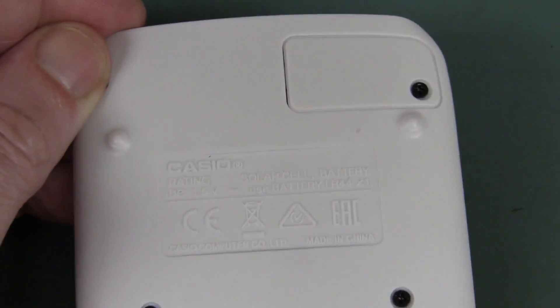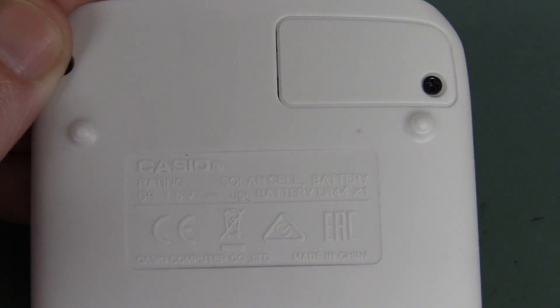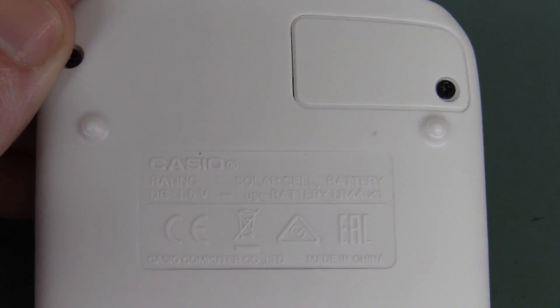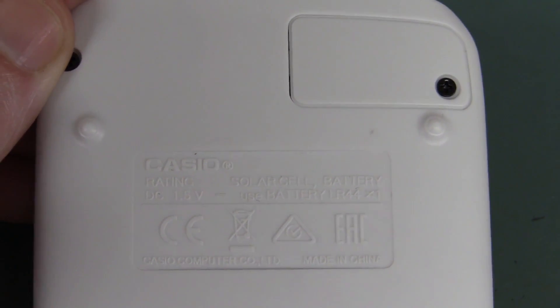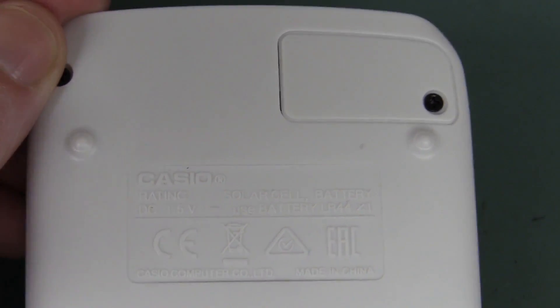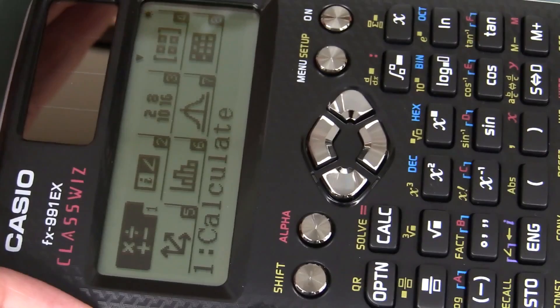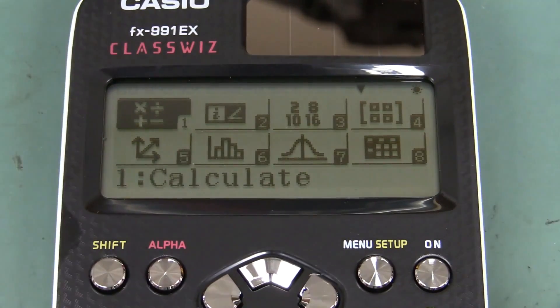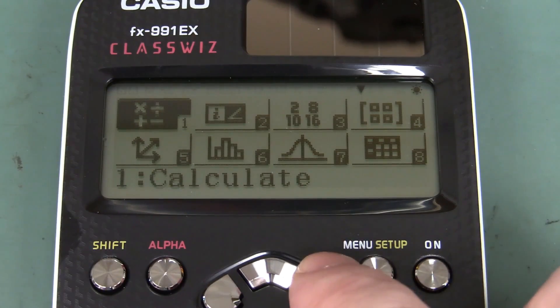Can we have a look at the specs there? Usually tells you the power. Usually it says, you know, 10 femto watts or something ridiculously low. It's got one LR44 battery in it and high-res display, and it can do everything, including the kitchen sink, I suspect.